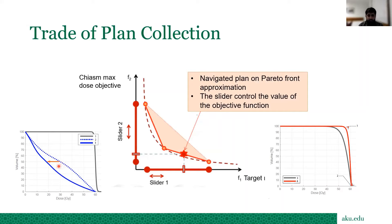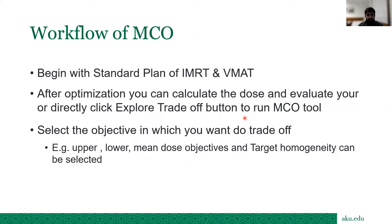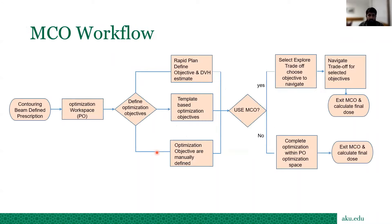In most cases, the maximum OAR reduction is around 20 to 30 percent. This is what we expect from the target, and this is how we get the best quality plan. The MCO workflow begins with a standard IMRT or VMAT plan. After optimization you can calculate the dose and evaluate your OARs, or directly click the 'Explore Trade-off' button to run MCO tools and select the objectives you want to trade off — for example upper, lower, mean dose objectives, or gEUD, and target homogeneity.